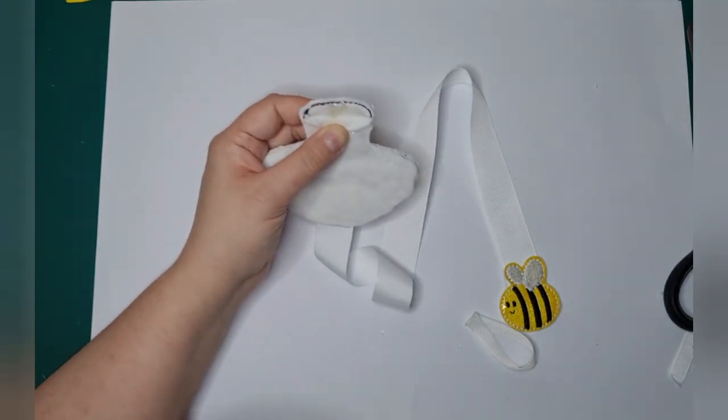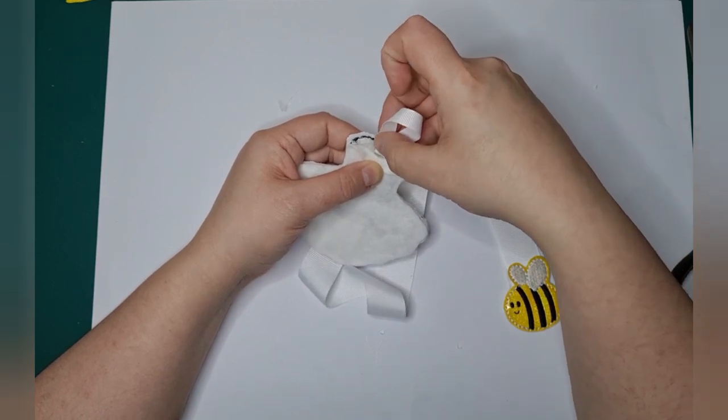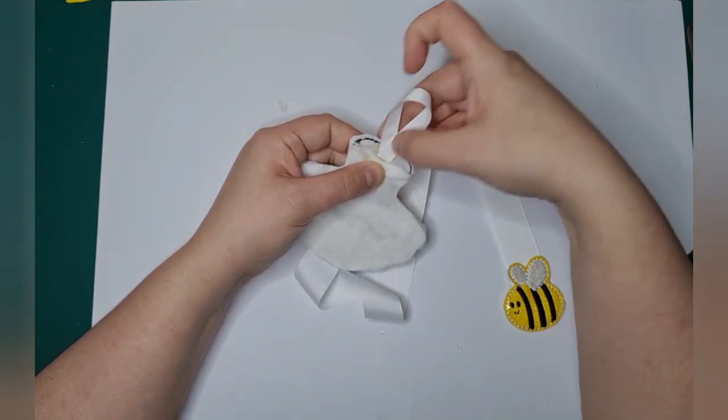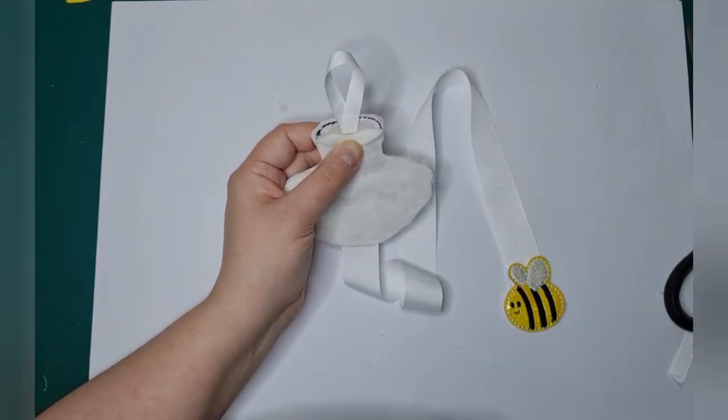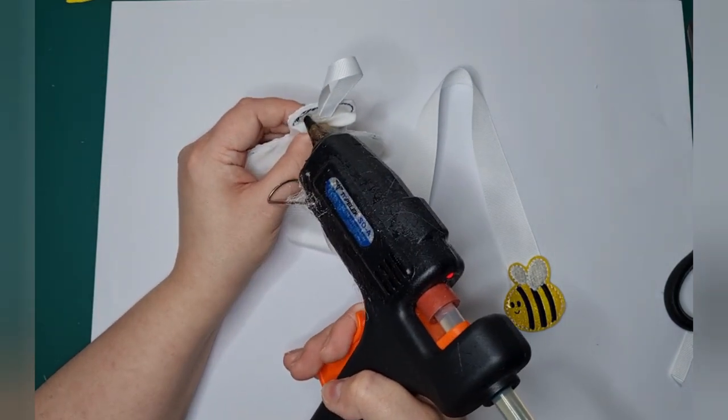That's where we want the hanging bit to be. Like that. And then we're going to re-glue the felt bit.